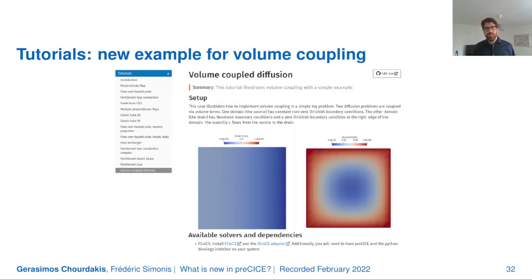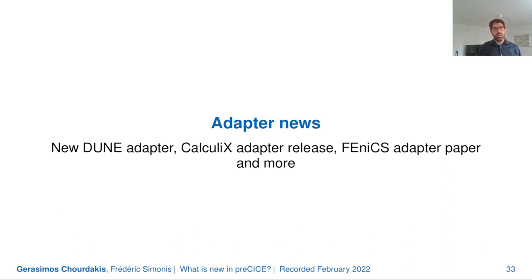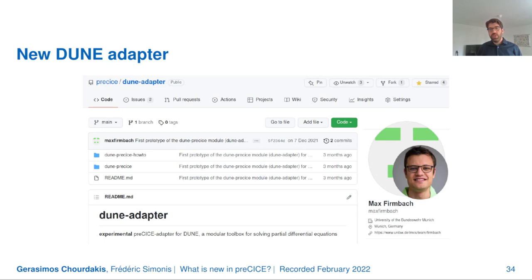The new volume coupling tutorial features two FEniCS participants — one a sink and one a source — with two overlapping domains where a quantity flows from the source to the sink. The new Dune adapter, the result of Max Firnbach's work, is already available on GitHub and on the Precise VM, so you can start trying it.